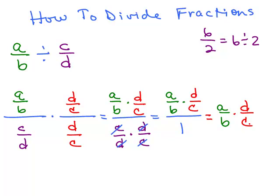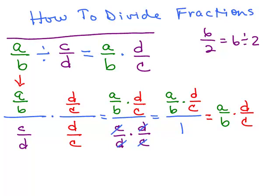So I started with A over B divided by C over D, went through this process, and ended up with A over B times D over C. So I'm going to write here: this is the same thing as A over B times — not C over D — but the reciprocal, D over C. That's the rule for dividing fractions, and below it is why it's true.